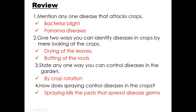Another question: take any one way you can control diseases in the garden. One is by crop rotation. How does crop rotation control diseases? Crop rotation breaks the life cycle of pests, and pests can spread diseases, so crop rotation will control diseases. Two, how does spraying control diseases? Spraying kills the pests that spread disease.